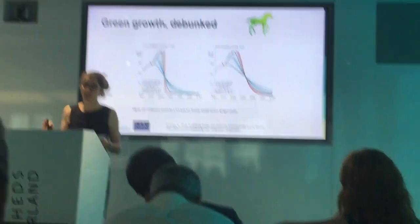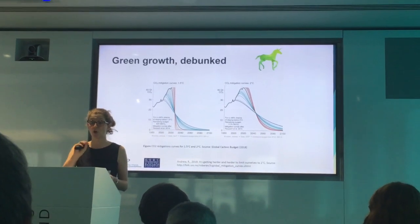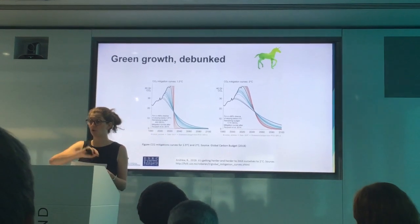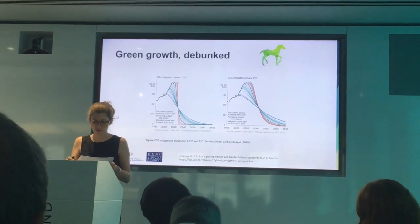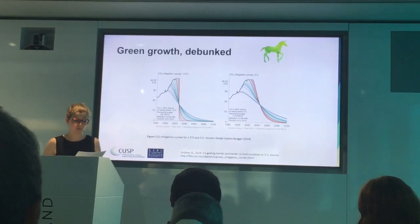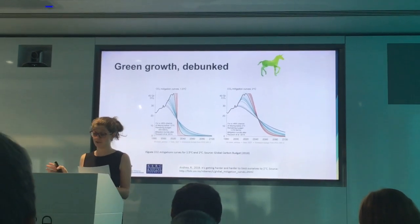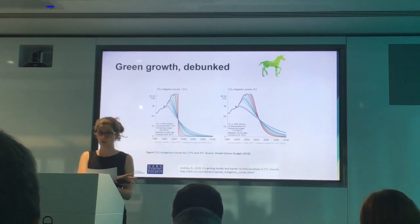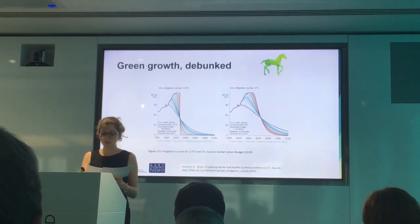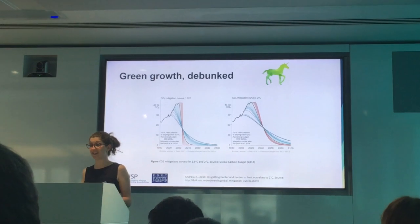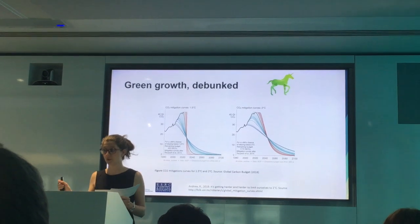That puts us far in excess of any kind of historical trend of decarbonisation. The IPCC's sixth assessment report on 1.5 degrees of warming gives 90 mitigation scenarios that would be consistent with achieving the Paris Agreement target and also continuing economic growth. However, almost every single one of those scenarios relies on the existence of a yet underdeveloped negative emissions technology called bioenergy carbon capture and storage, or BECCS.